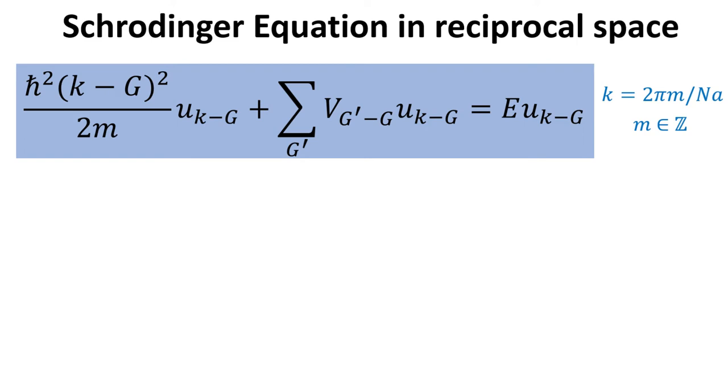To answer this question, we utilize the formalism developed in our discussion on Bloch's theorem. The Schrödinger equation in reciprocal space is shown in the blue box. The reciprocal lattice vectors for our 1D problem are as shown.